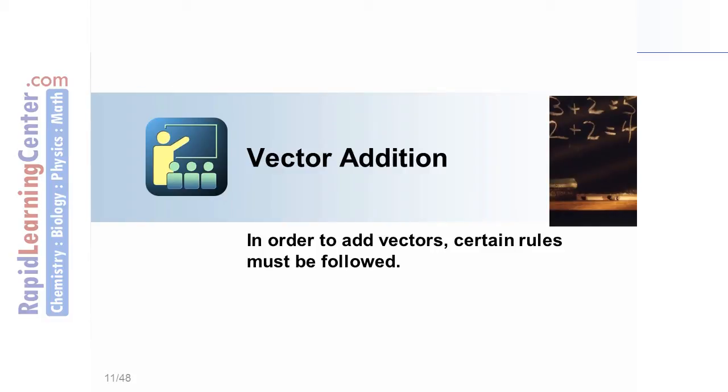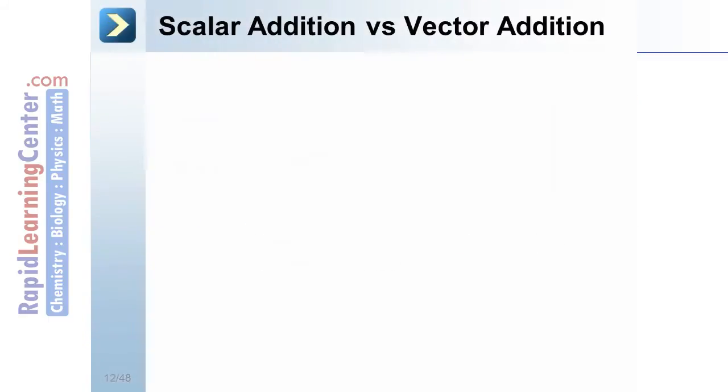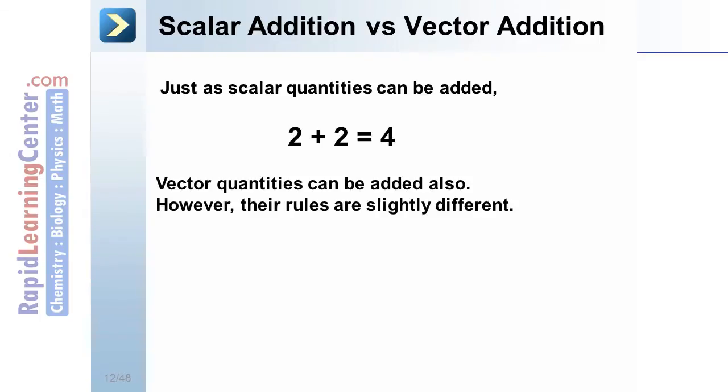Vector addition. In order to add vectors, certain rules must be followed. Scalar addition: just as scalar quantities can be added, 2 plus 2 equaling 4, vector quantities can be added also. However, their rules are slightly different.